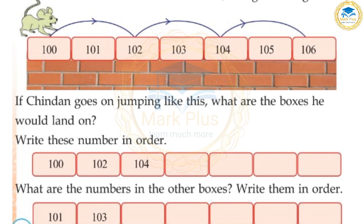How do we go to the number? First is 100, then 102, 104. Next is 106, next is 108, 110, 112.